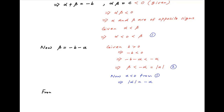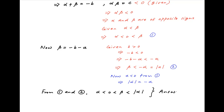Combining Results 1 and 2, we get alpha is less than 0, which is less than beta, which is less than modulus of alpha. And this is the required result.